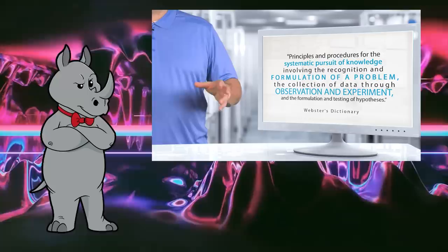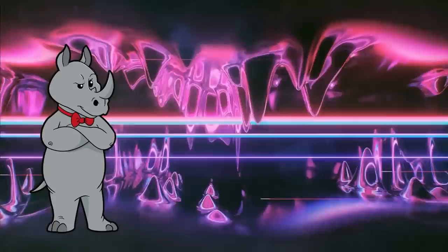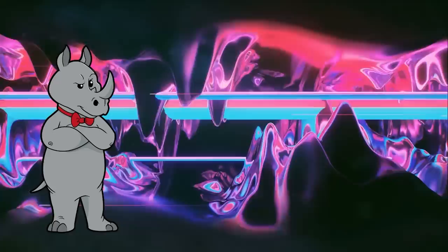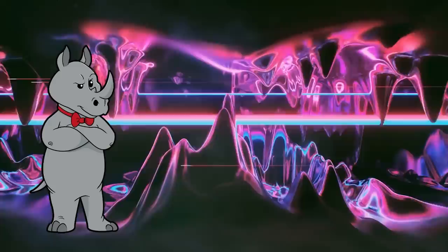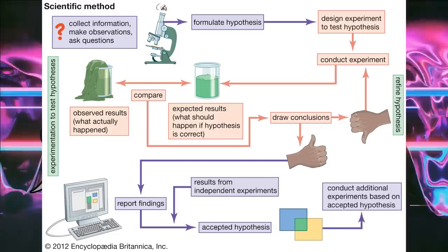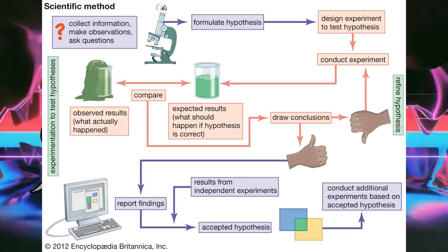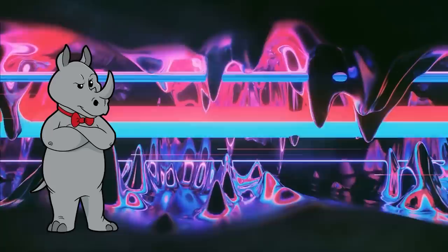The scientific method: principles and procedures for the systematic pursuit of knowledge involving the recognition and formulation of a problem, the collection of data through observation and experiment, and the formulation and testing of hypotheses. And it bears mentioning that Merriam-Webster is not a technical scientific dictionary — this is just giving the general idea for a layperson. While this definition is not incorrect, it doesn't properly flesh it out. In the Encyclopedia Britannica, it explains how you form a hypothesis, design a test, perform it, observe results, refine your hypothesis, repeat, publish your results, have your test replicated by other scientists, and only then is the hypothesis considered accepted scientifically.